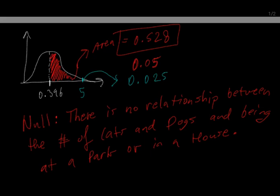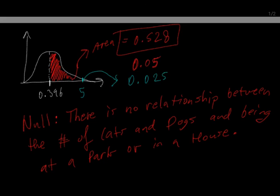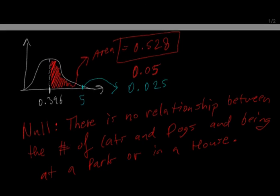But because the actual chi-squared value is 0.396, and our actual p-value is 0.528, we fail to reject the null hypothesis. And so, there's actually nothing really going on between the park and the house and the number of cats and dogs. And so, that's it. Thanks for watching.